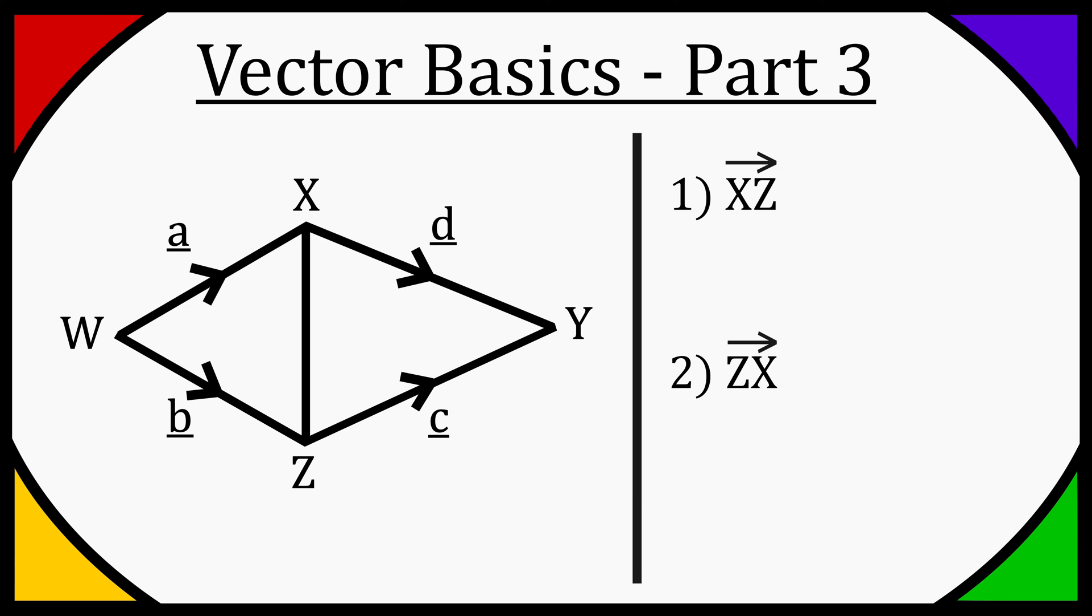So for question 1, XZ, there's actually 2 routes you can take. I've chosen this highlighted route. As you can see, the A is going the opposite direction to which we want to go. So W to X is A, we want to go the opposite way. So we're going to be using a negative A, and then to get from W to Z we're going to be using a positive B. So we're just following that B vector in the way it's meant to go.